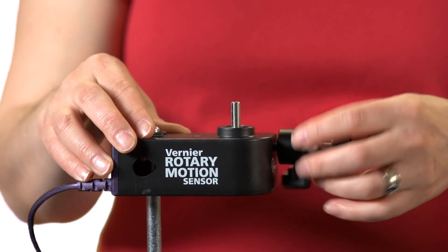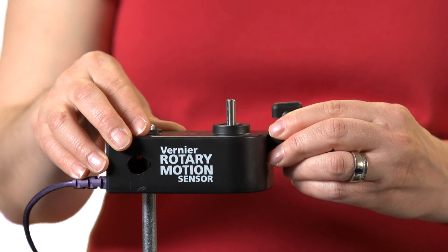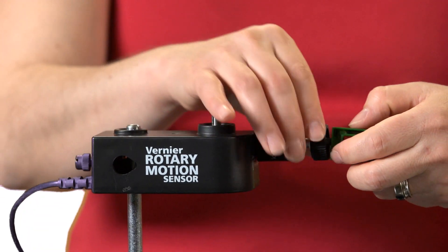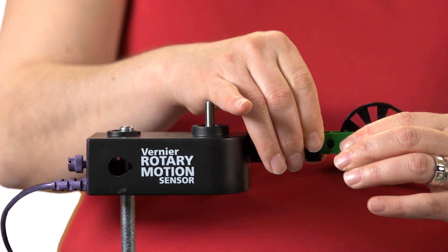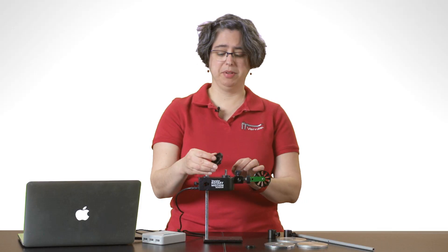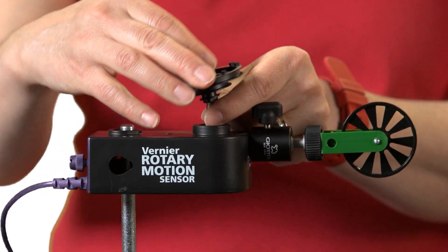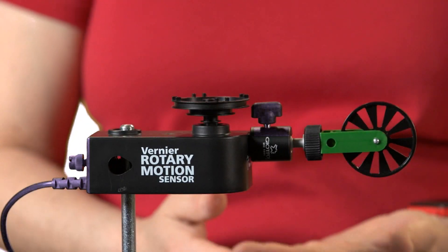And I add the pulley, and then I have the three-step pulley that comes with the Rotary Motion Sensor, so I'm going to attach that as well.